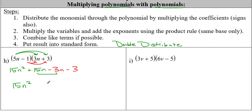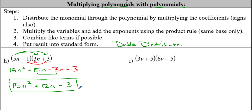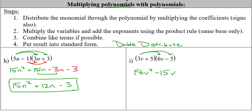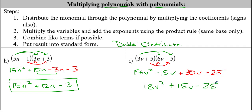We've got our squared term, two middle terms that are like terms, and our constant at the end. Dropping down: 15n squared, then 15n minus 3n gives positive 12n, then minus 3. Very good - and we are in standard form. For the second example: 3v times 6v gives 18v squared; 3v times negative 5 gives minus 15v; 5 times 6v gives plus 30v; and 5 times negative 5 gives minus 25. Combining like terms: negative 15 plus 30 gives positive 15v, so we get 18v squared plus 15v minus 25.